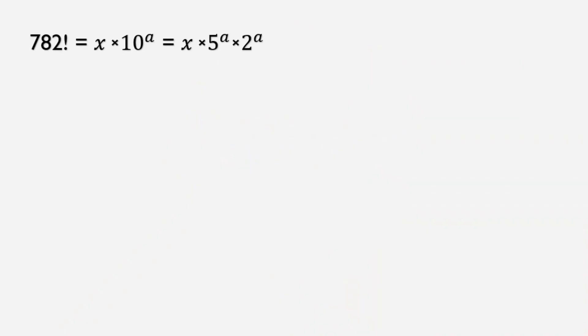So here is the solution. We can write 782 factorial is equal to x multiplied by 5 to the power a multiplied by 2 to the power a.